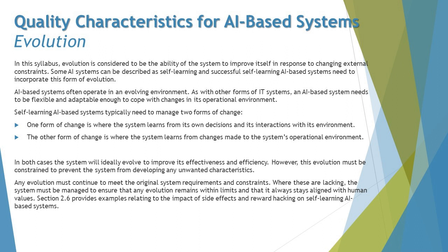Generally, evolution is about AI-based systems transforming themselves — when they improve due to changes to an external constraint, which could be a factor, customization, or changes to their operational environment. They start behaving differently due to this upgrade or changeover, which is what we call evolution. The other part is of course the self-learning AI-based systems, which adapt and keep upgrading themselves, making decisions differently according to their adaptation.